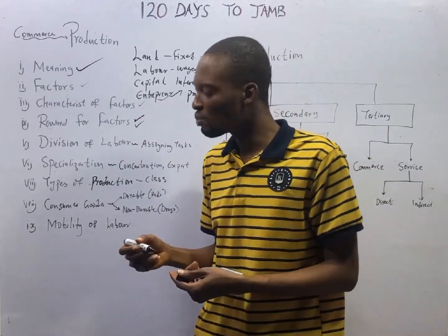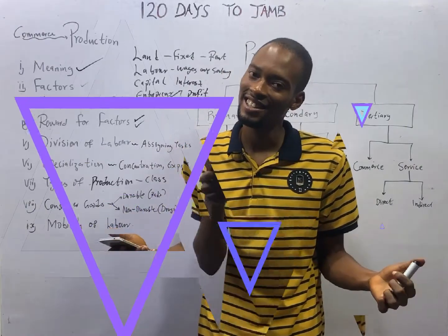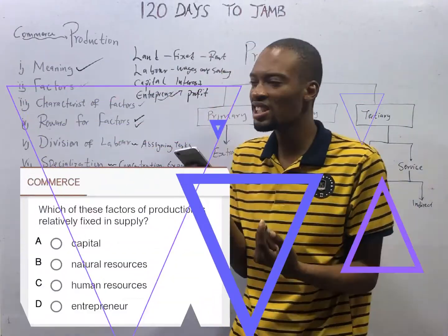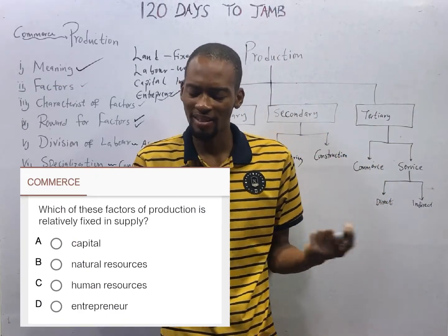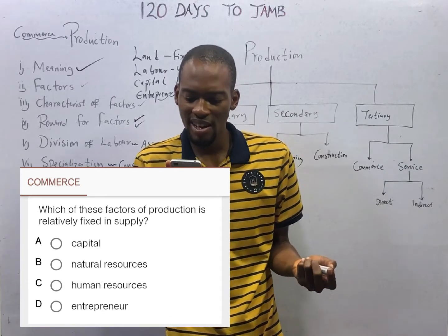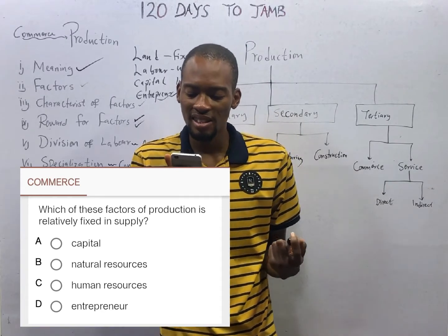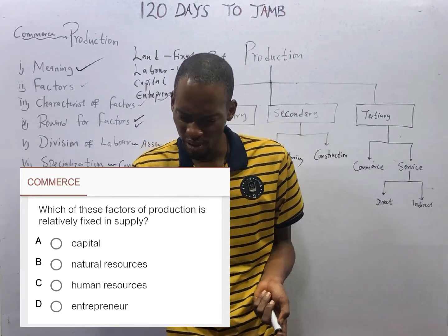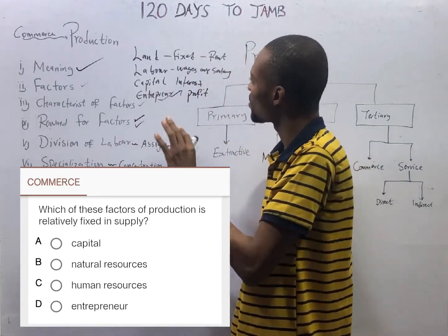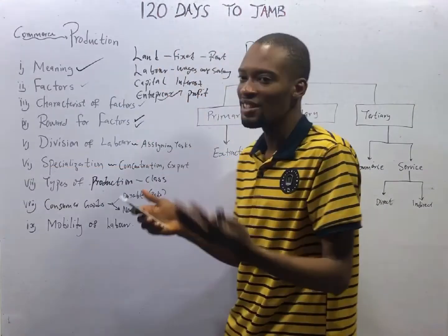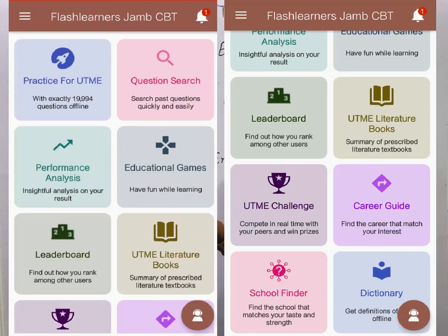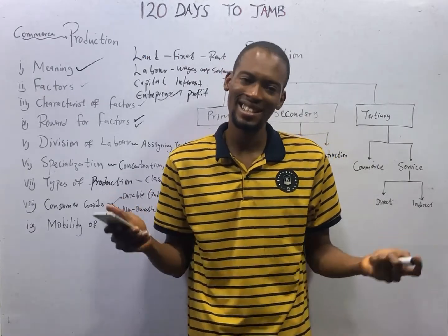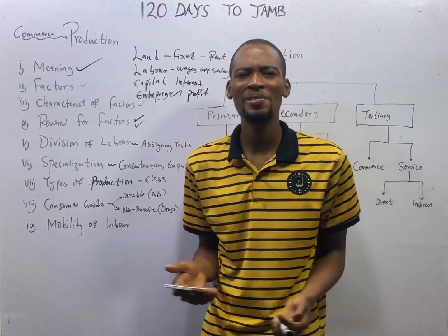Let's look at one question: which of these factors of production is relatively fixed in supply? A. Capital, B. Natural Resources, C. Human Resources, D. Entrepreneur. Land is fixed in supply, and land falls under natural resources, so option B is the correct answer. For your assignment, open the Flash Nenas Jam app, click on question search and type 'factors of production', and answer all the questions. See you in the next episode.